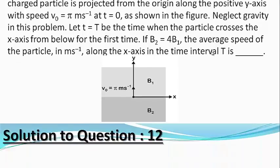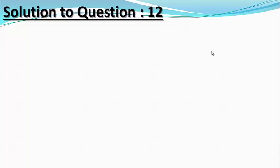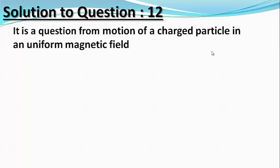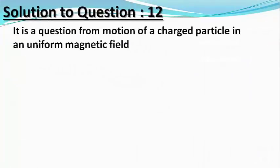This is a very interesting problem on motion of charge particles in uniform magnetic field and the answer to this question is to be given in the numerical form with an accuracy of two decimal points. Before going further, please do press the subscribe button and don't forget to press the bell icon to get the notifications of all my future videos. Let us solve the question.